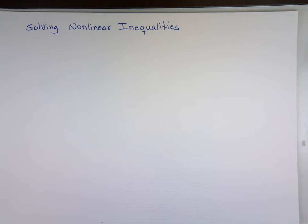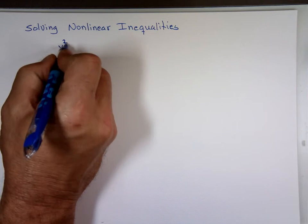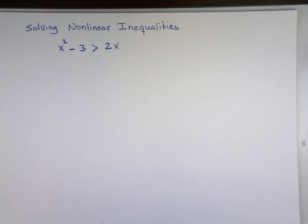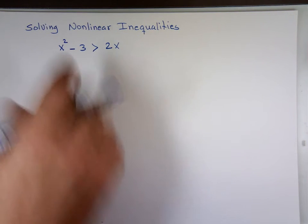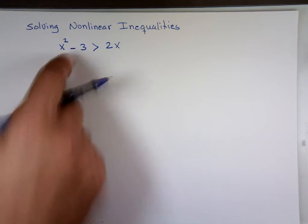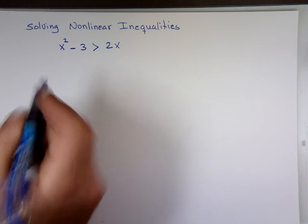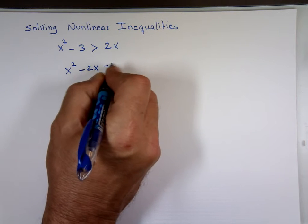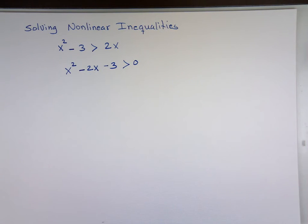This is a non-linear inequality — a quadratic equation with an inequality in it. The approach here is different than linear. With linear, you isolate x and put all the x's on one side and all the numbers on the opposite side. Here you have a quadratic, so you want to move everything to one side.